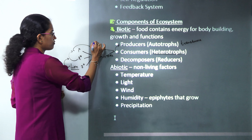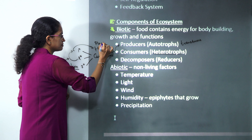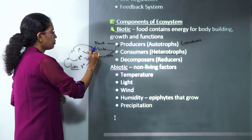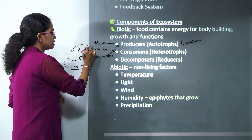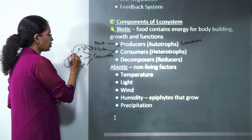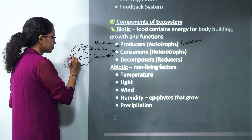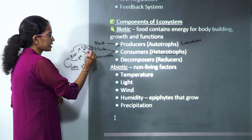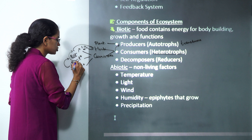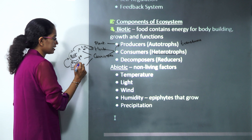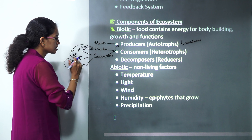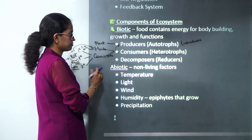In our food chain example: plant is the producer; grasshopper fed on the plant; bird fed on the grasshopper, so bird becomes a primary carnivore; snake fed on the bird, so snake becomes a secondary carnivore. That's how we understand the various primary, secondary, and tertiary carnivores.